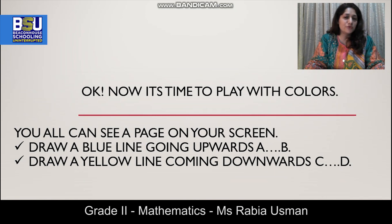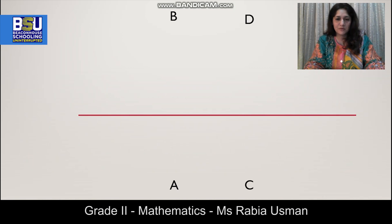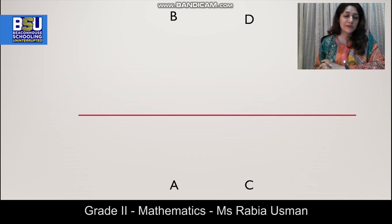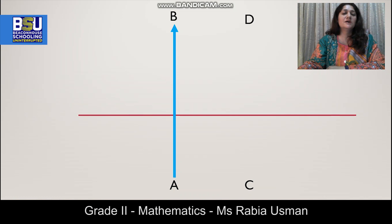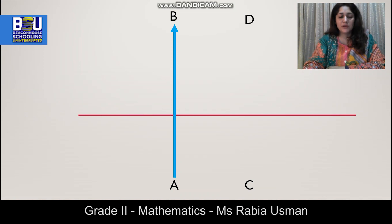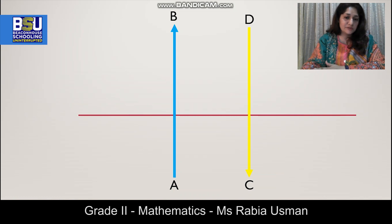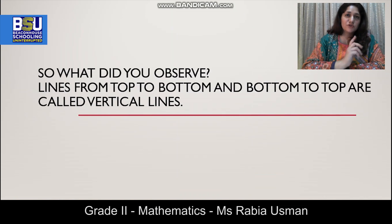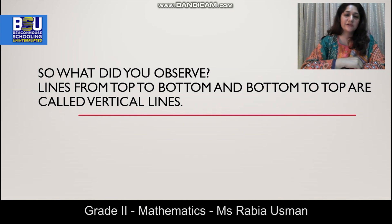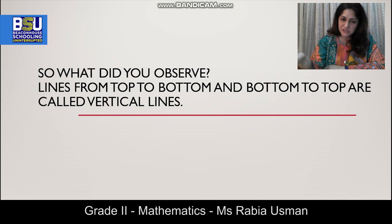Now I want to show you a page and we are going to explore more lines. So let's explore more lines with colors. You have a page in front of you — observe what will happen next. Did you see one line going upwards from bottom to top? You can see a blue line on your screen going from bottom to top, named A and B. Next you have another line coming downwards which is C and D. AB is going upwards and CD is coming downwards. So lines from top to bottom and bottom to top are called vertical lines. So far we have done three types of lines: parallel, perpendicular, and vertical.